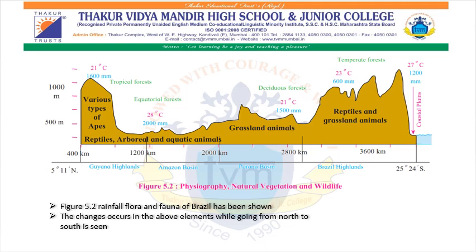As you go ahead, the Brazilian Highland has a temperature of about 23 degrees Celsius and rainfall of 600 millimeters. The type of forest here is temperate forest, and animals found include reptiles and grassland animals. In the coastal plains, the temperature is about 27 degrees Celsius and rainfall is 1200 millimeters, with the Atlantic Ocean to the east. This figure clearly shows the types of animals, amount of rainfall, and temperature across these regions.